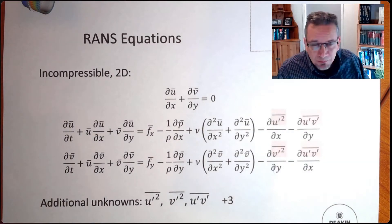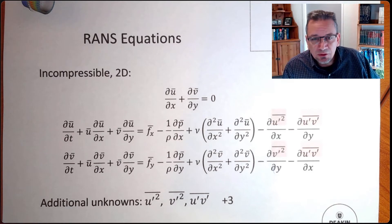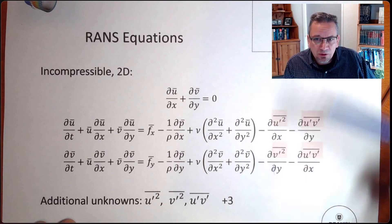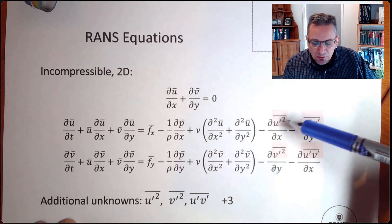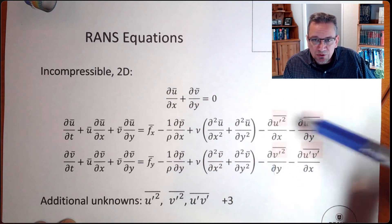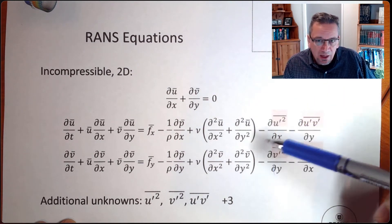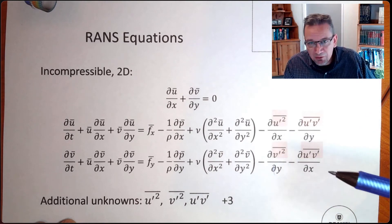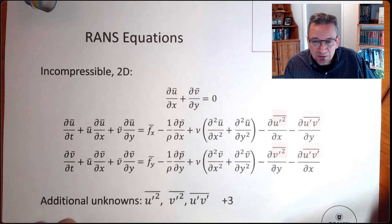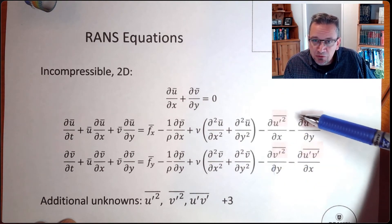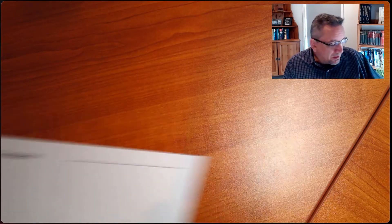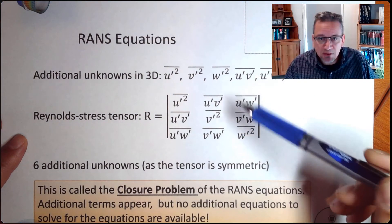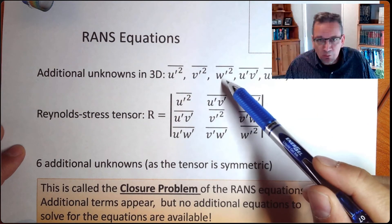So how can we now model or simulate a turbulent jet? If we start with the RANS equations, this is for 2D. You have here some unknowns that you need to add — you need to have some additional equations for that you don't have. So you need to have a closure for these, some sort of expression for these terms. And in 3D, that's going to be a little more complex because you are having one more component.